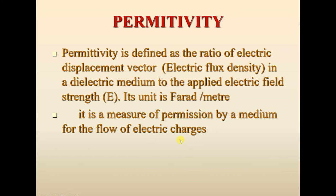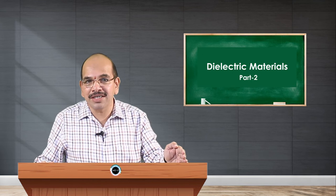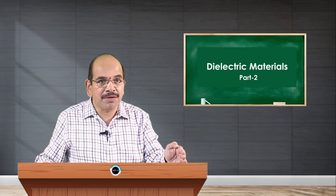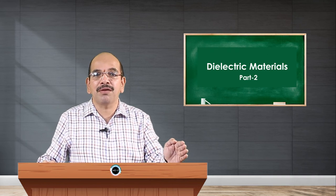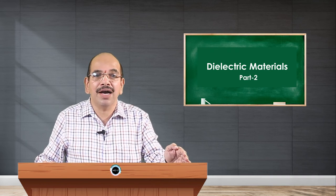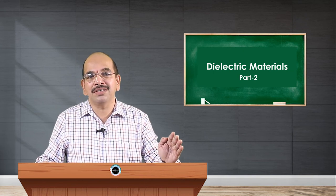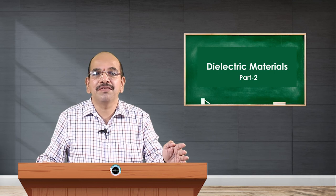Permittivity is a measure of the permission offered by the medium for the flow of electric charges. If the permission is zero, permittivity is zero; if the medium offers permission, it has some permittivity. Mathematically, it is the ratio between electric flux density and the strength of the external electric field. Even if you apply a large electric field, if there is no electric flux density, then permittivity is zero. Permittivity is a property of the medium.